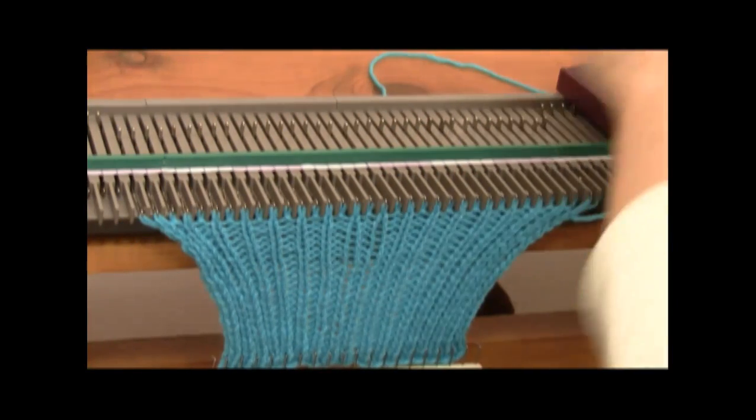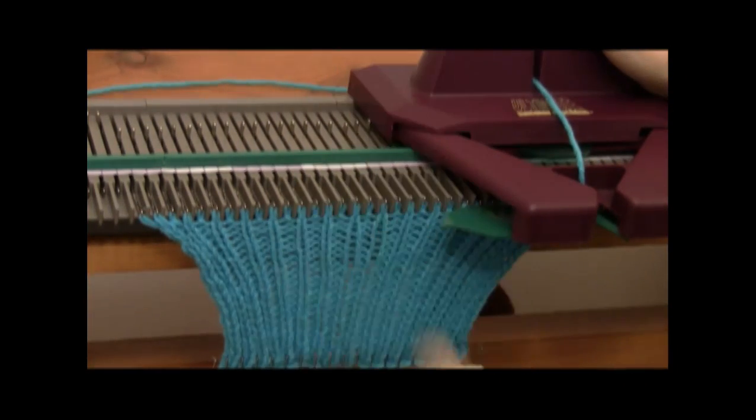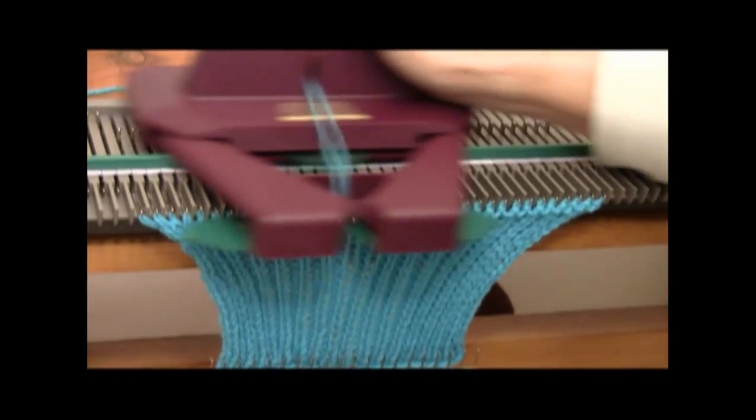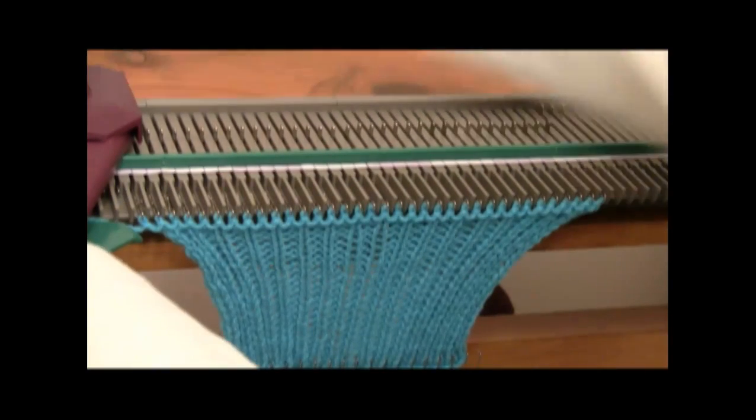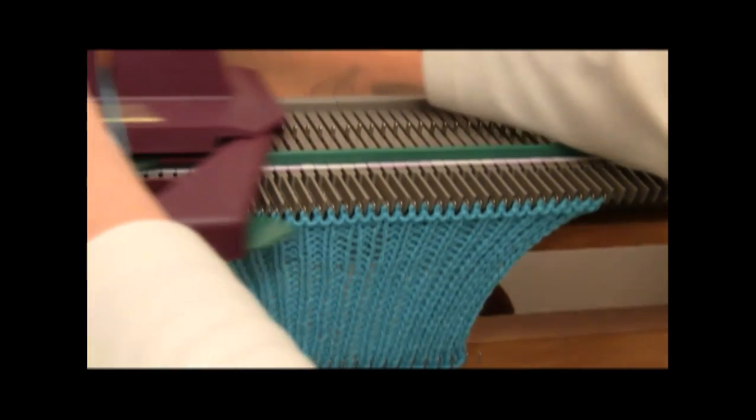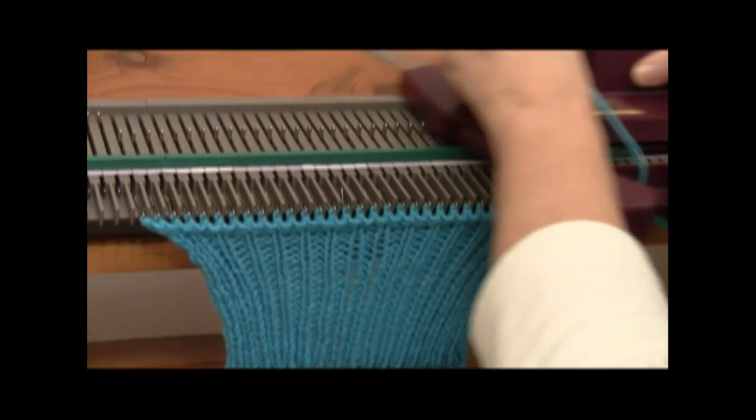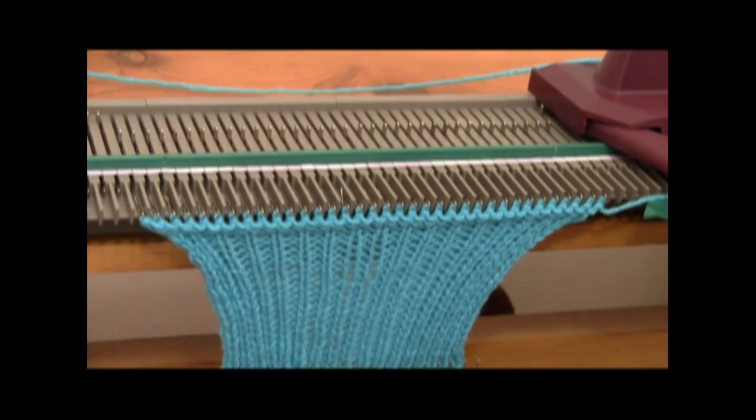Once the ribbing is all latched up, you're going to knit 37 rows with Key Plate 2. This is for the body of the mitten.